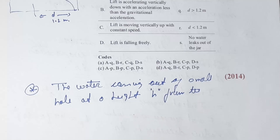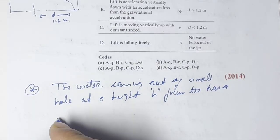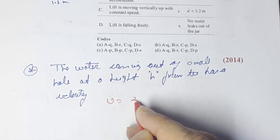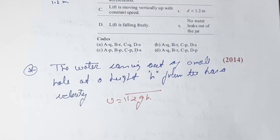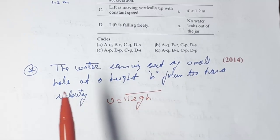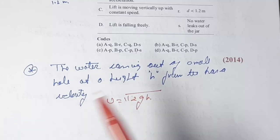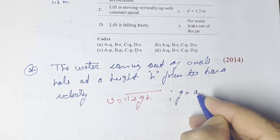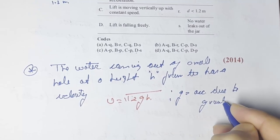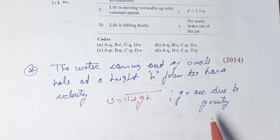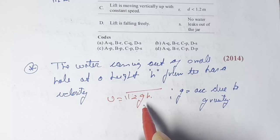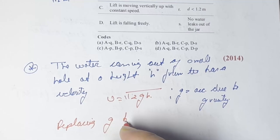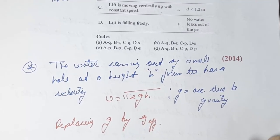Water exiting from the small hole at a height h has velocity v equal to square root of 2gh, where g is the acceleration due to gravity. However, since the water is in a lift that is moving, g will be replaced by g effective, due to the lift's movement.